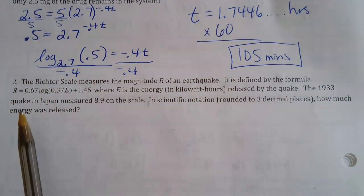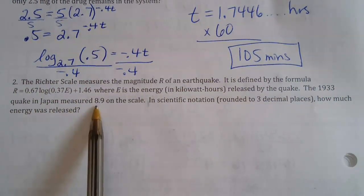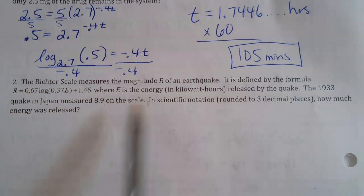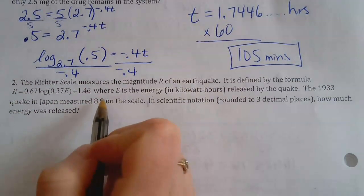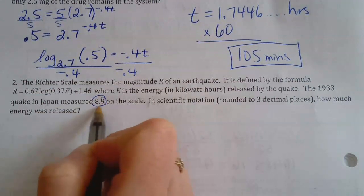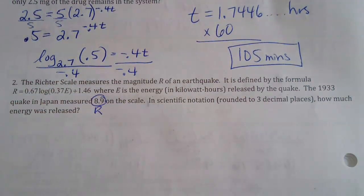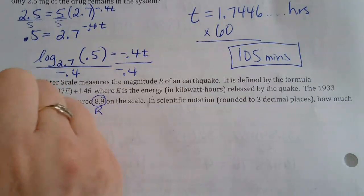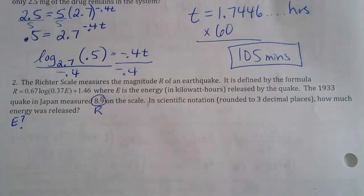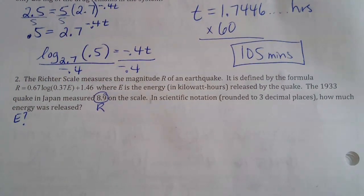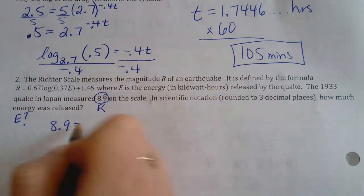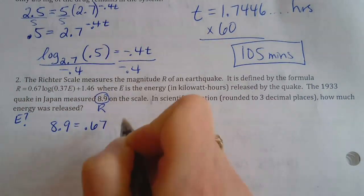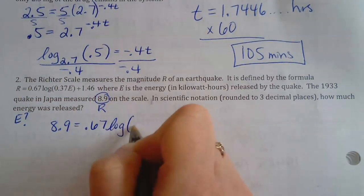In 1933 a quake in Japan measured 8.9 on the Richter scale. In scientific notation rounded to three decimal places, how much energy was released? The 8.9 goes in for R, and we're solving for capital E. So we set the equation equal to 8.9.